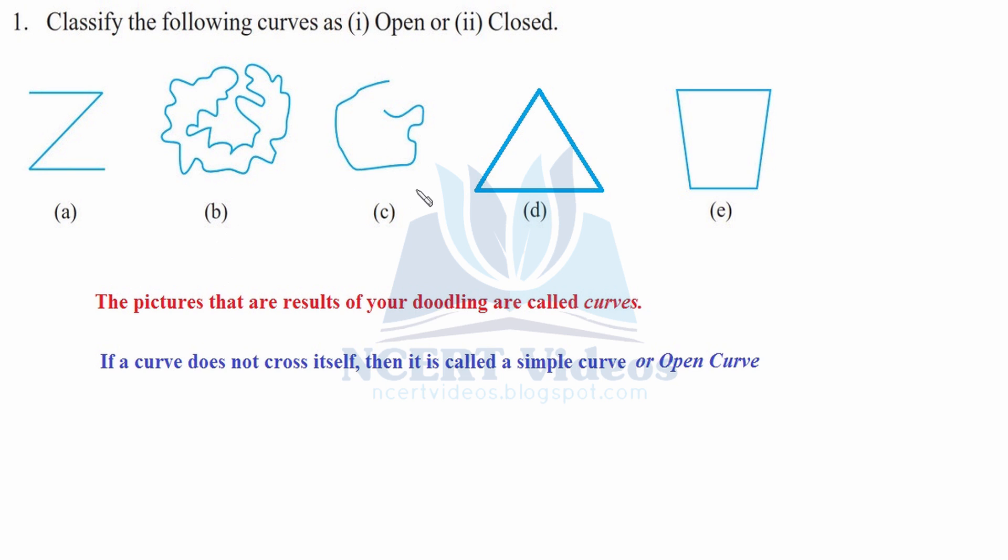Now the C part. It is a curve but it is not closed, it is open. In order to be closed it should have been connected.